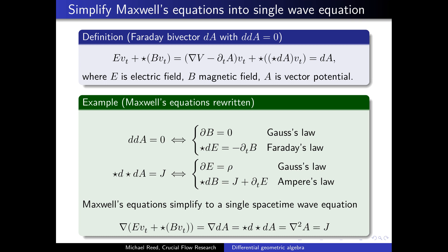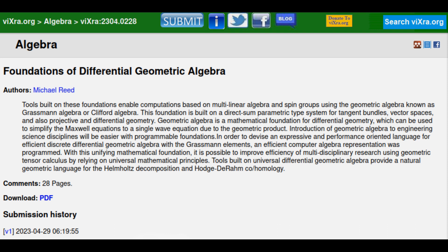That's how we get Maxwell's equations rewritten as a single equation. We know d dA equals zero by definition, so we don't need to define that equation. But the equation we do need to worry about is star d star dA equal to j, and that's simplifying Maxwell's equation into a single equation.